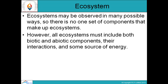All ecosystems must include both biotic and abiotic components, their interactions, and some source of energy. There are pond ecosystems, terrestrial ecosystems, and many more. Terrestrial ecosystems are land-related; a pond ecosystem is a complete cycle in itself, with energy at every level. A complete set of components — biotic factors, abiotic factors, their interactions, and a source of energy — together make up an ecosystem.